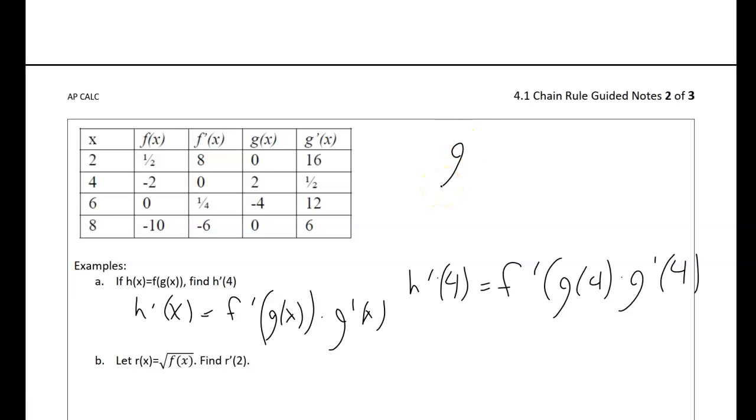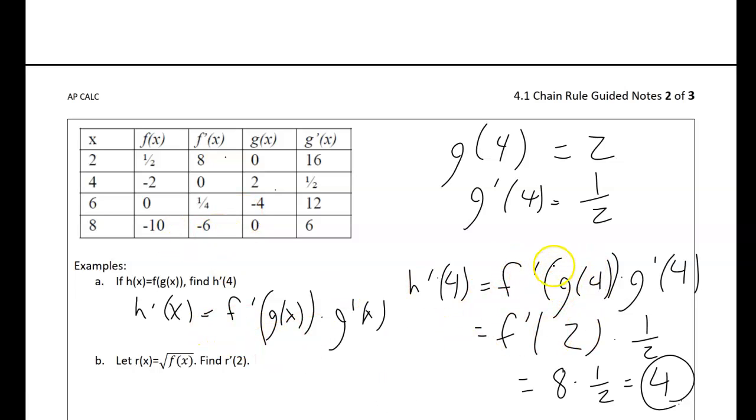For this case, g of 4 is 2, and g prime of 4 is one half. Notice I don't know what's going to go inside of f prime yet. I'm going to simplify this now by substitution: f prime of g of 4 is 2, times one half, which is g prime of 4. Now I need f prime of 2, which is 8, so I can plug that in, and I get 4 as my final answer. Notice what I did not use is f prime of 4. I never use that zero, because I don't need f prime of 4—I need f prime of g of 4.